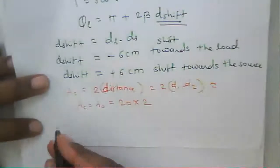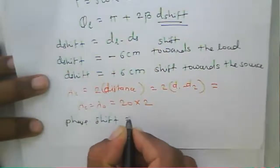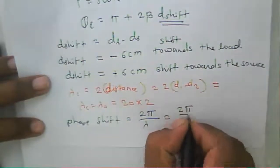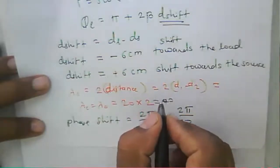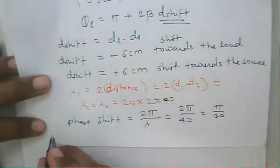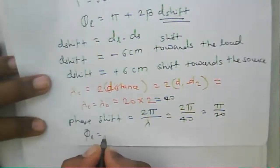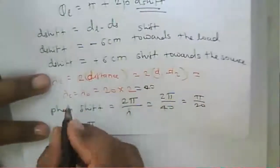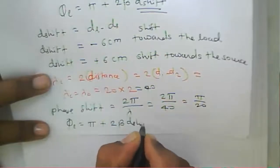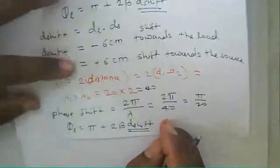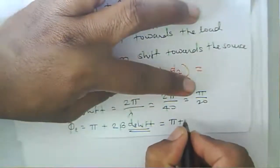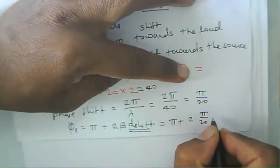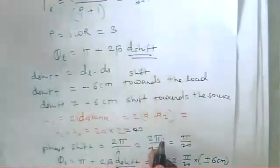The phase shift beta is pi over 20. The phase angle of the reflection coefficient is computed as pi plus or minus 2 beta times d, where d is the shift. We calculate pi plus 2 times beta times d, using d equal to plus or minus 6 cm, to find the angle and ultimately the load impedance.